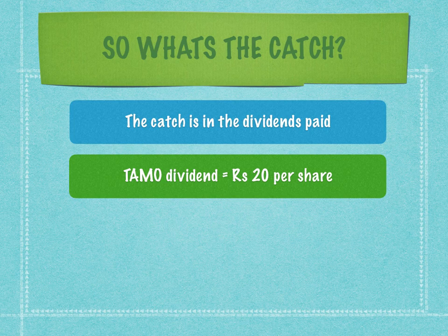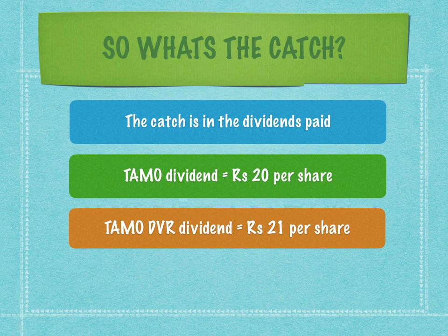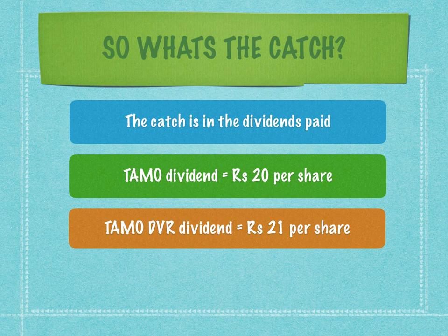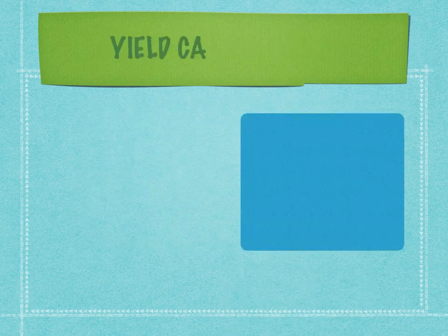Tata Motors dividend is 20 rupees per share for common stock, and Tata Motors DVR dividend is 21 rupees per share — this is 2019 data. The DVR holder is already getting only one-tenth of the voting rights, and the dividend is also only one rupee more. This doesn't make much sense at face value, so DVR holders calculate something called dividend yields.